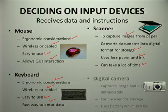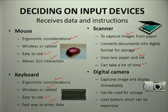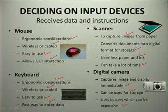The last basic input device is a digital camera. A digital camera captures images and displays them immediately, and can be used for storage purposes. It uses a battery which can be very expensive. These are some of the input devices along with their advantages and disadvantages.